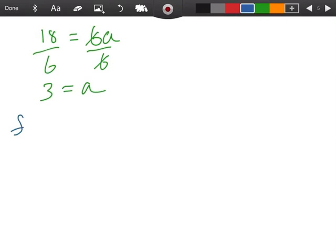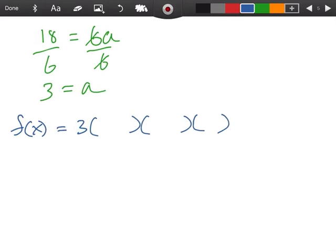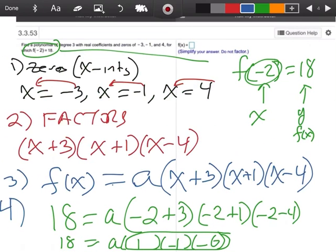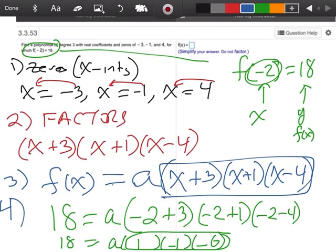Okay. So now, let's go ahead and write out our function. We're going to have 3 times, and we had 3 factors. Let me come back and see what they were. x plus 3, x plus 1, x minus 4. x plus 3, x plus 1, x minus 4.